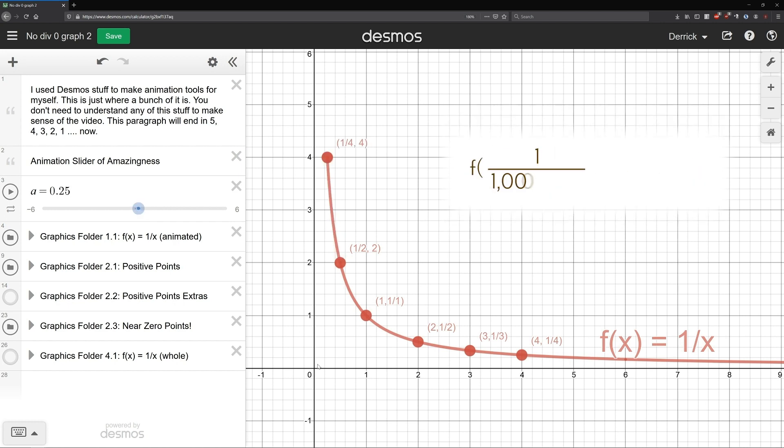It's also the case that when x is one millionth, the function value is one million. This is why it's tempting to call one over zero infinity, because that's where the function is headed. As it happens, we can make a math statement that captures this idea. We say that the limit as x goes to zero from the right, the plus signifies the positive side of the x-axis, the function value heads towards infinity. And yes, this is calculus stuff right here.